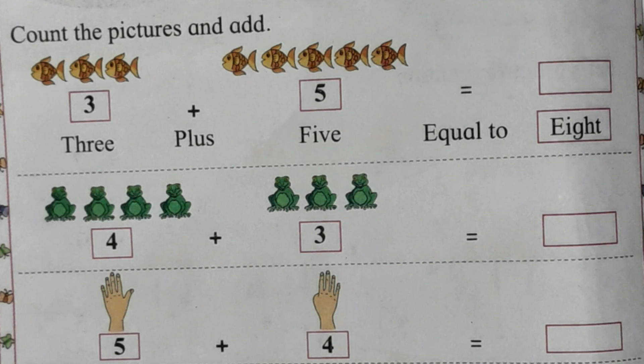In second picture, four frogs and three frogs makes seven frogs. Means four plus three is equal to seven. In third picture, five fingers and four fingers makes nine fingers. Means five plus four is equal to nine.